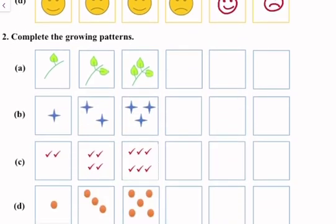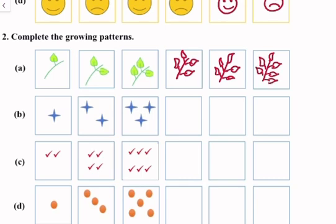Complete the growing patterns. In the first picture we can see there is only one leaf, then two leaves, then three leaves, four leaves. Then we will make five leaves and then six leaves: two, three, four, five, and six.